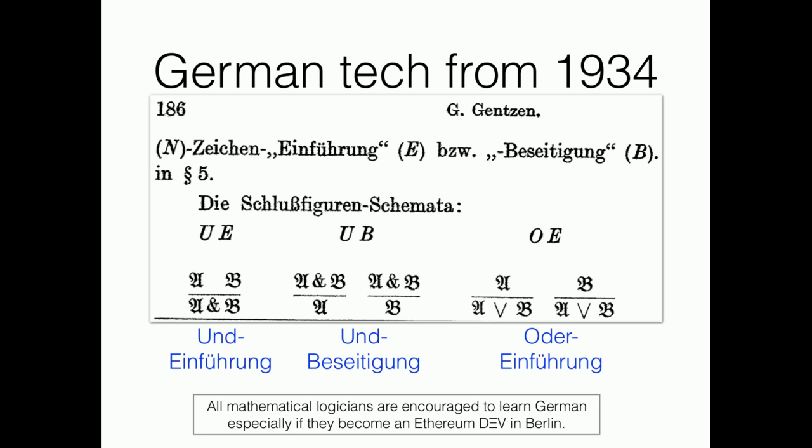So there are rules like und-einführung, und-beseitigung. It's called and introduction because on the upper side there's no and symbol. On the bottom side we have an and symbol. It's saying that if you have a proof of A and if you have a proof of B, you can construct a proof of A und B.